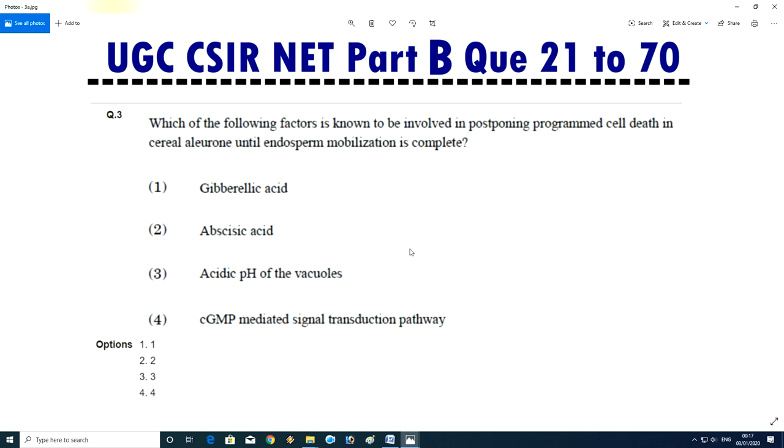Question No.3 - Which of the following factors is known to be involved in postponing programmed cell death in cereal aleurone until endosperm mobilization is complete? Gibberellic acid, abscisic acid, acidic pH of vacuole, or cyclic guanosine monophosphate mediated signal transduction pathway. Answer will be B, abscisic acid, means second.